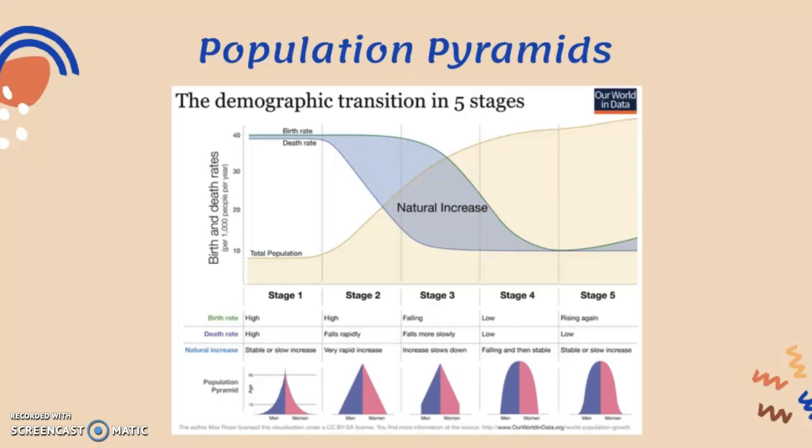In stage three, because the birth rate falls, the bottom of the pyramid becomes more narrow due to fewer births and a smaller young population. In stage four, you see a beehive-shaped population pyramid with a more balanced dependency ratio between the elderly and the young. Finally, in stage five, the young population becomes even smaller than the elderly, showing signs of an aging population.